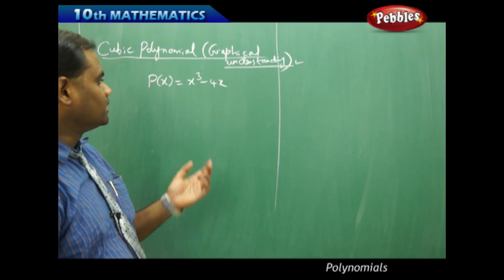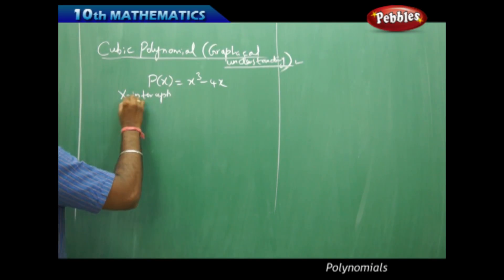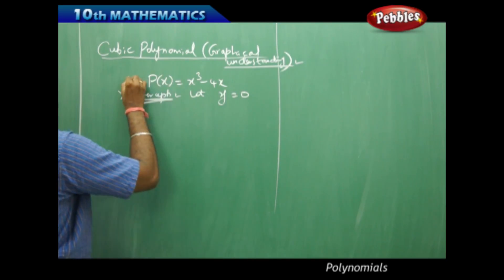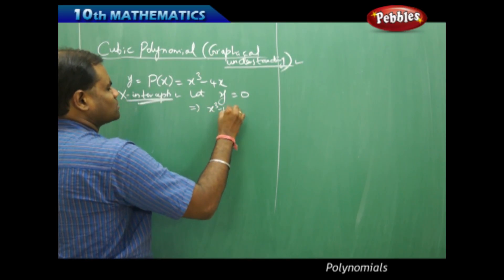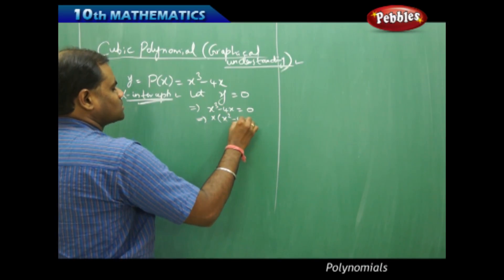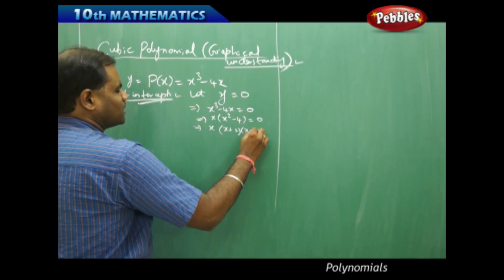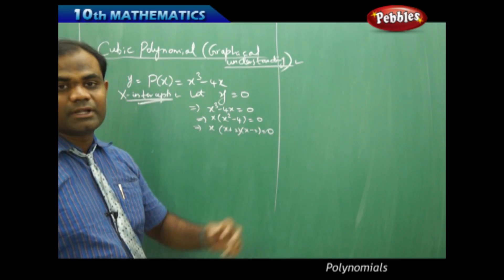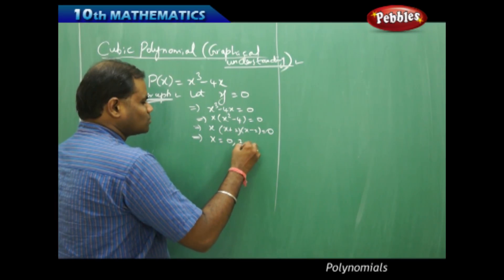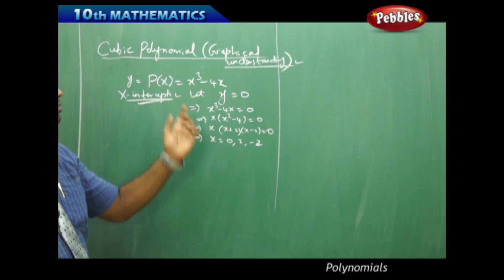I can find my x-intercepts first by letting y equal to 0, where y is equal to p of x equal to x cubed minus 4x. So when y equals 0, I get x cubed minus 4x equal to 0, which gives me x times x squared minus 4 equal to 0. This further gives me x times x plus 2 times x minus 2 equal to 0, using the identity a squared minus b squared equals a plus b times a minus b. Therefore I get 0, 2, and minus 2 as the zeros of the cubic polynomial x cubed minus 4x.